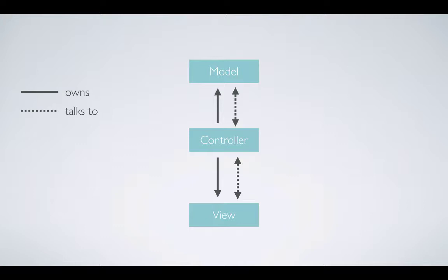In MVC, the controller becomes the bottleneck because the model code ends up there, and the view code — if you're modifying the view — goes to the controller as well. What developers usually do is put a lot of code into the controller. Since the controller is just a middleman orchestrating between the model and the view, it ends up becoming massive. And it is very hard to test these controllers.